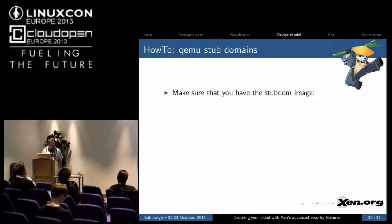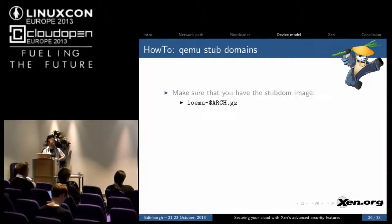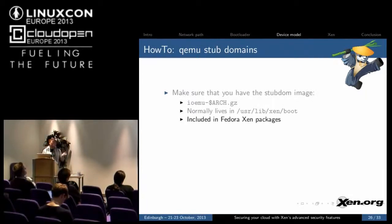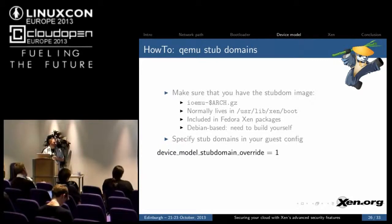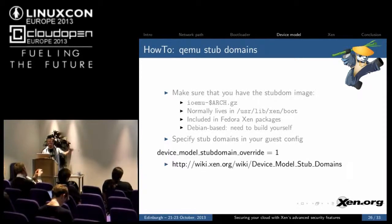QEMU stub domains are also fairly simple to set up. You need to make sure you have the image first — it's called ioemu-arch. It lives in pretty much the same place, included in the Fedora Xen packages but not the Debian packages. Once you have it in the right place where the tool stack knows where it is, you just need to specify stub domains in your guest config. There's much more information about stub domains, including links to how to build it if you're running Debian, on the wiki page.